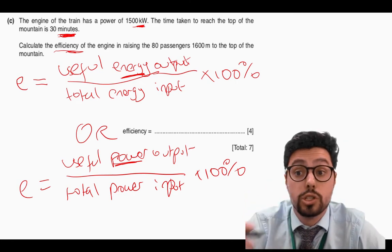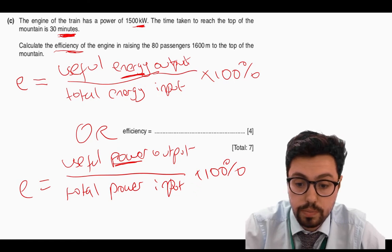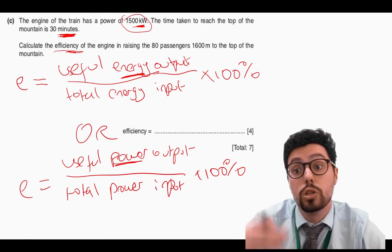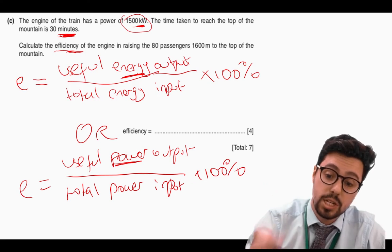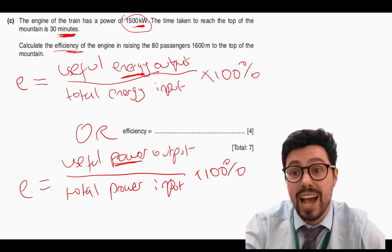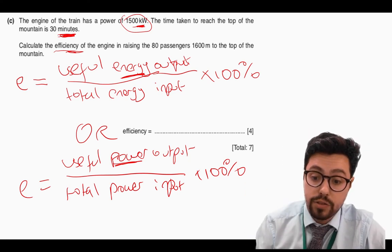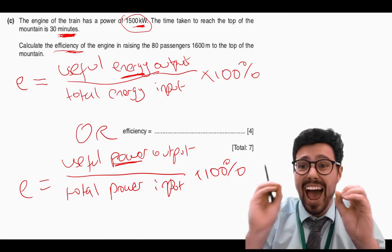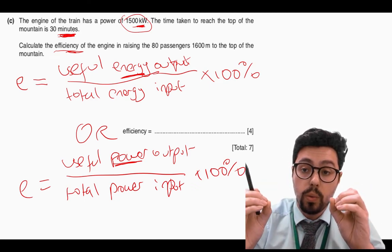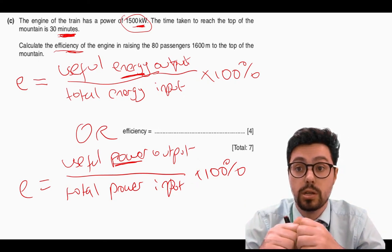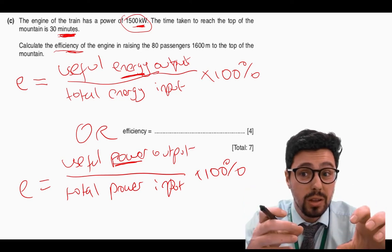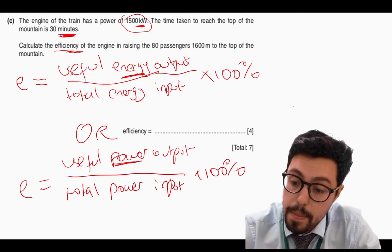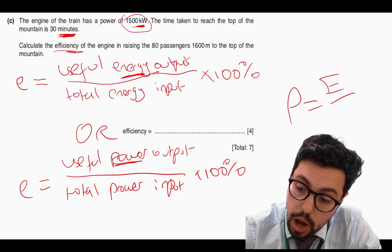You could choose to answer this question two ways — using the energy equation or the power equation. The key things you have: you know the power of the engine (total power in) and you know the useful energy transferred into gravitational energy lifting your people up. We have a power and an energy — we can't put those numbers straight into either equation. We either have to convert the power into an energy or convert the energy into a power using: power equals energy over time.